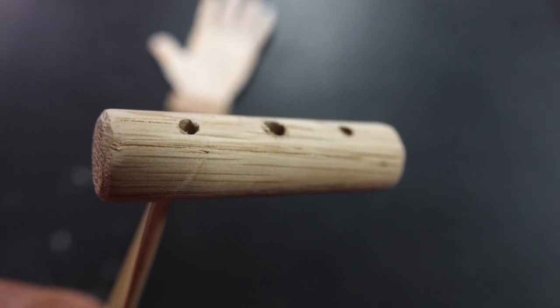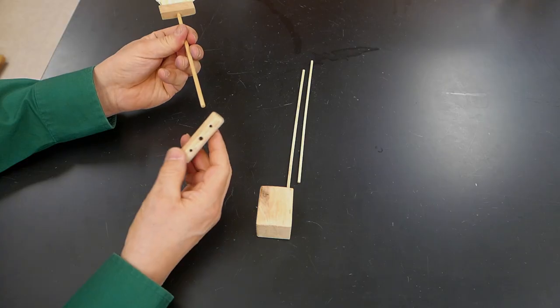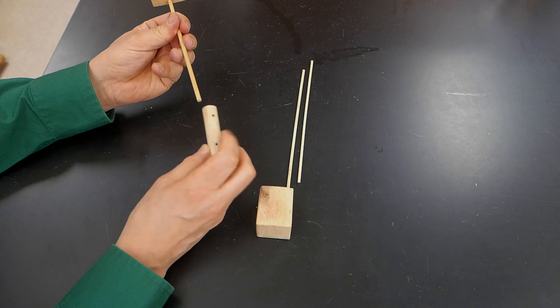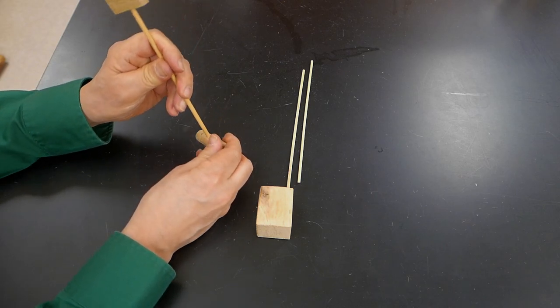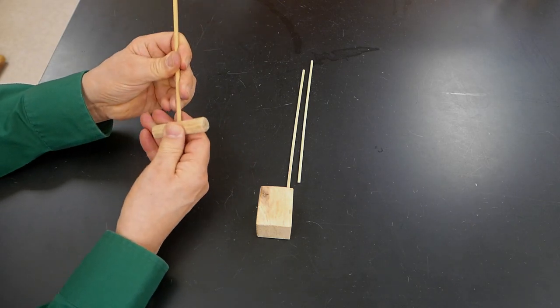The next piece is a small wooden dowel. It has three holes drilled in it. And that skewer is simply going to fit into the middle hole. Right like that.